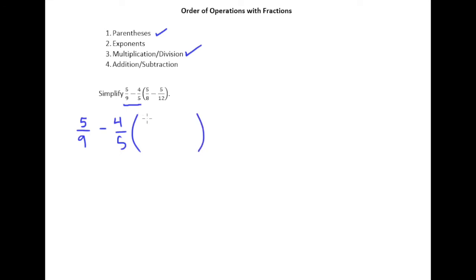So since I need to subtract 5/8 and 5/12 first, let's find a least common denominator. And so between 8 and 12 being our denominators, the least common multiple of those is 24. So our least common denominator is 24.